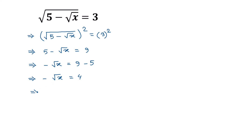Now multiplying both sides by negative 1 to remove the negative, we get positive 1 times square root of x, so the left side will be square root of x is equal to 4 times negative 1, so the right side will be negative 4.